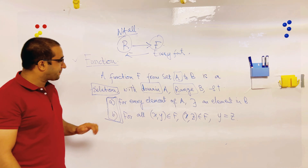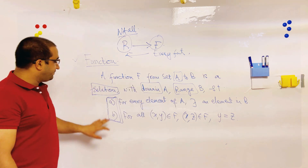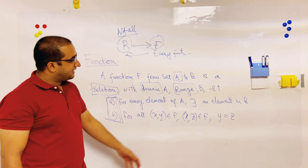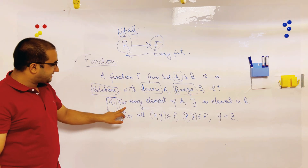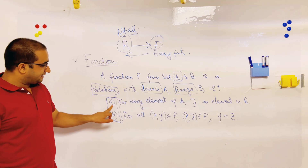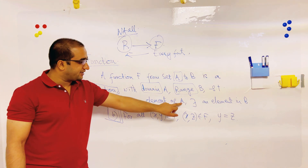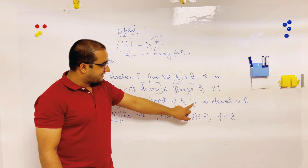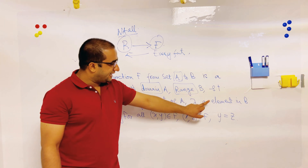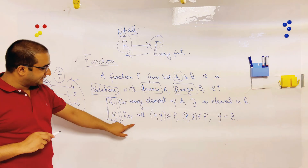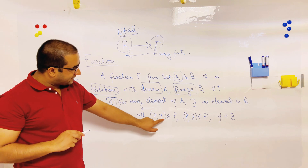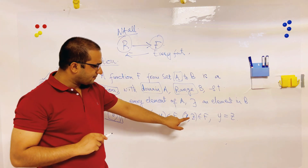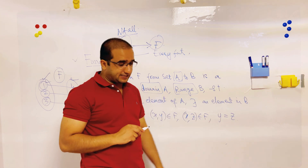A function F from set A to B is a relation with domain A and range B, such that for every element coming from A — the first element of the ordered pair — there exists an element in B. The second property is: for all (x, y) belonging to F and (x, z) belonging to F, then y must equal z.